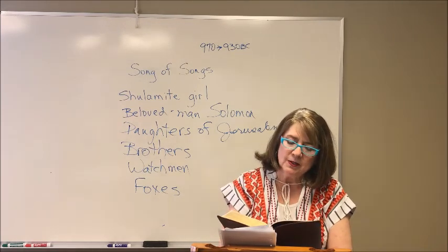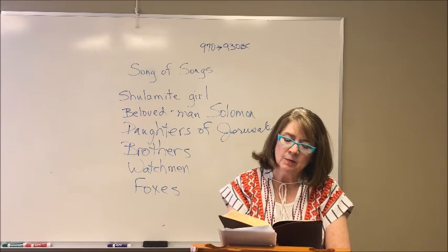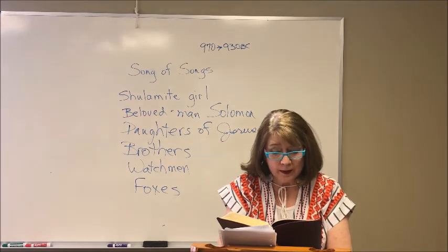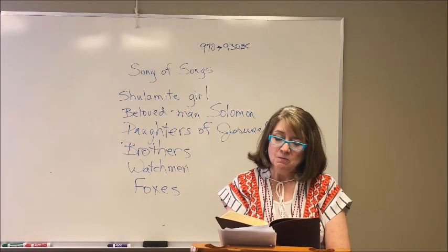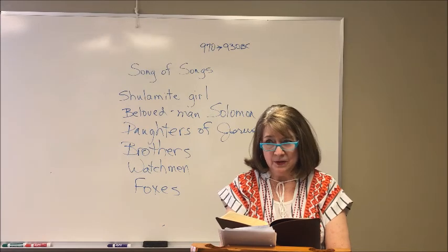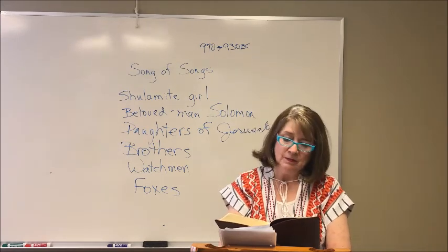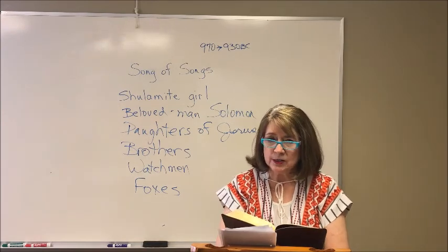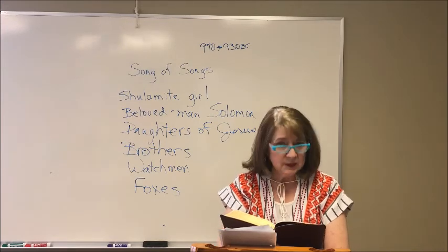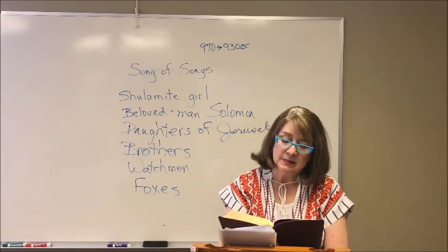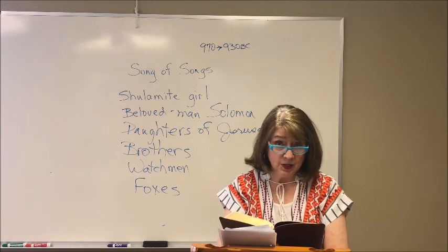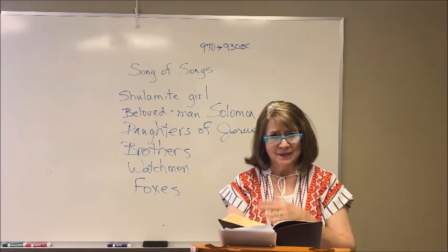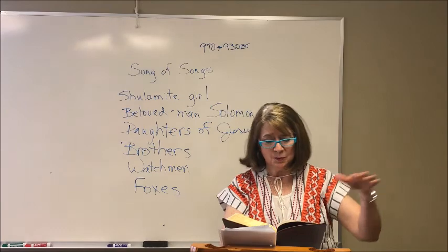Those first five books — Genesis, Exodus, Leviticus, Numbers, and Deuteronomy — are the books of law, the Torah. They have wonderful stories of the beginning of the Hebrew nation. From Joshua down to Esther, we have the historical books, very specific stories about specific times — the story of the kings, of the judges, the history of the values that Judeo-Christian principles are built upon.